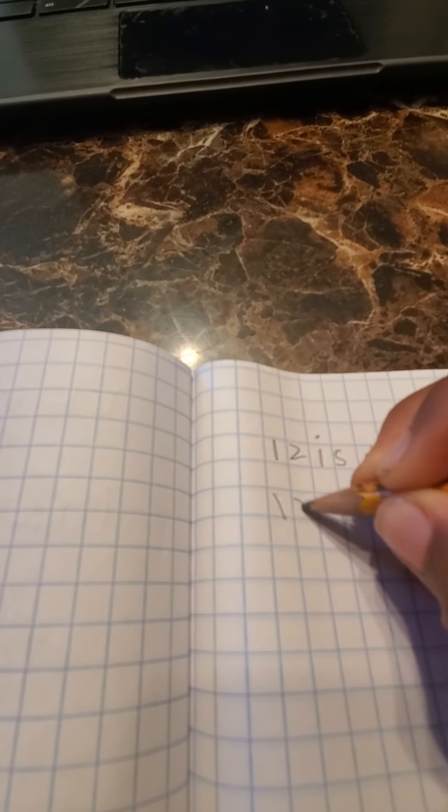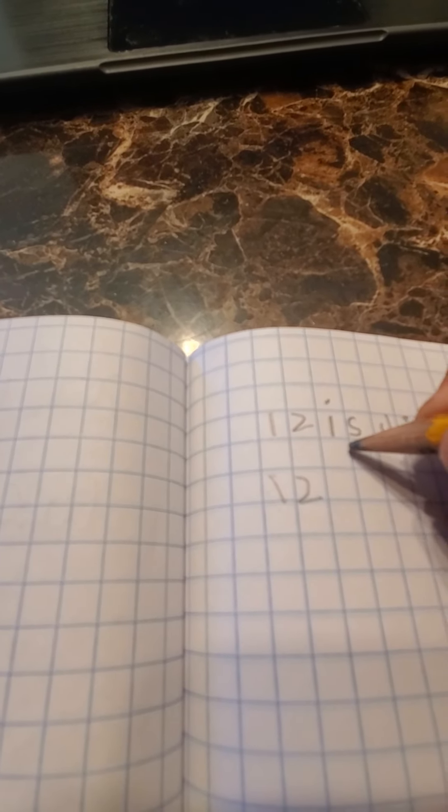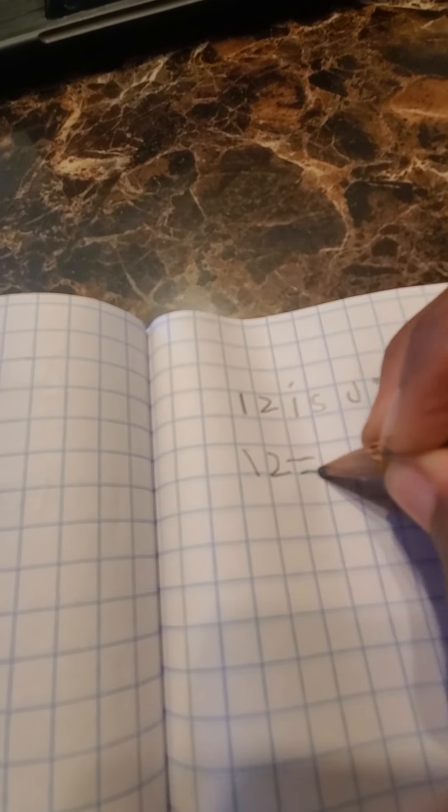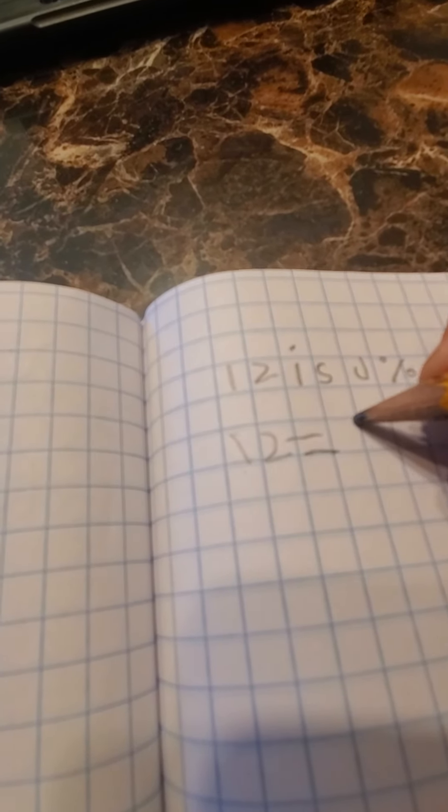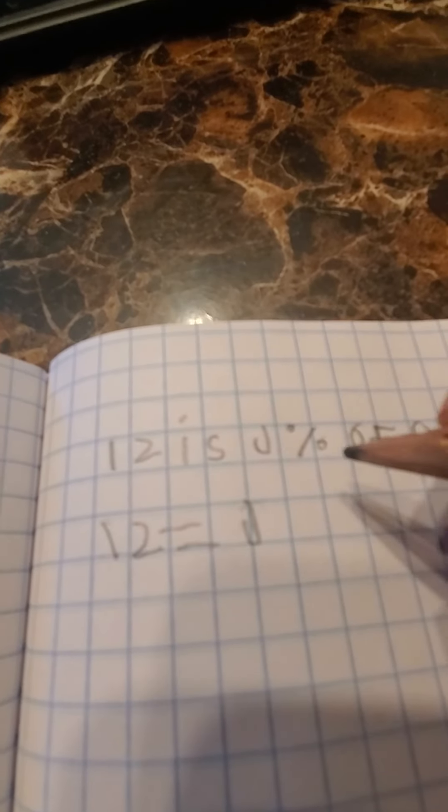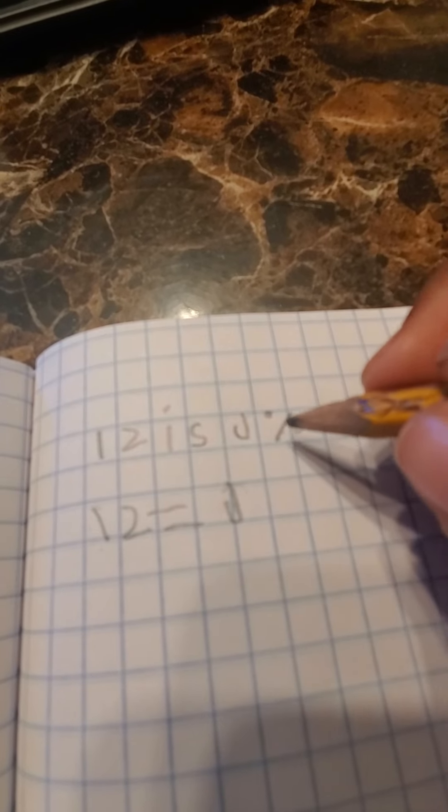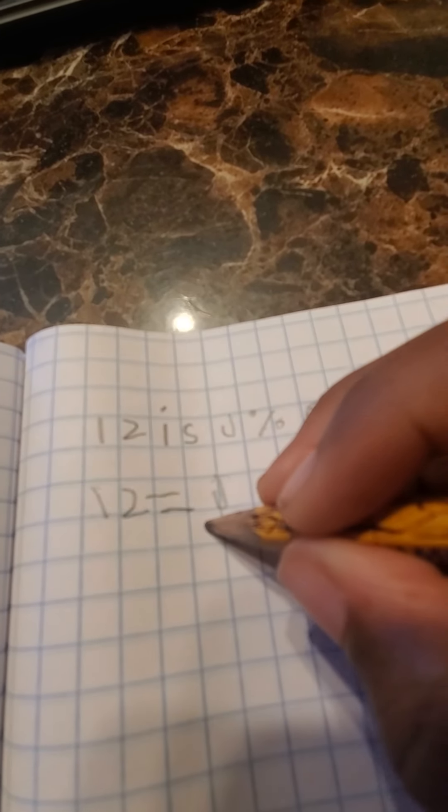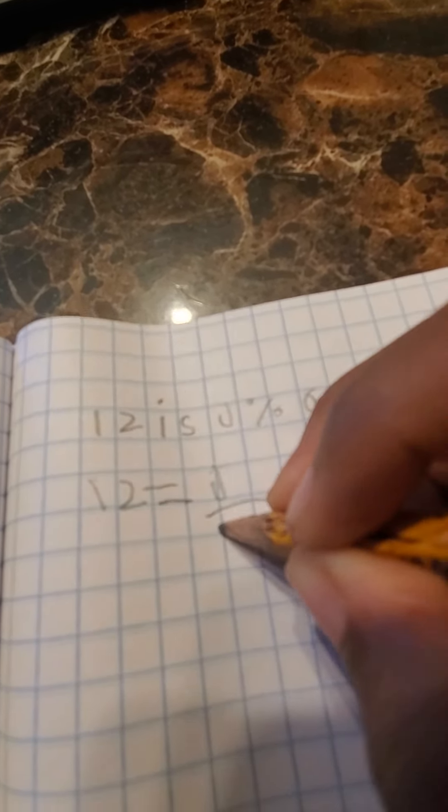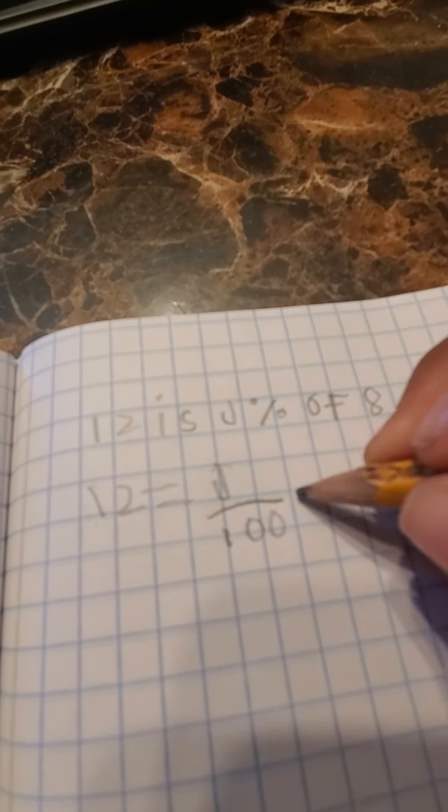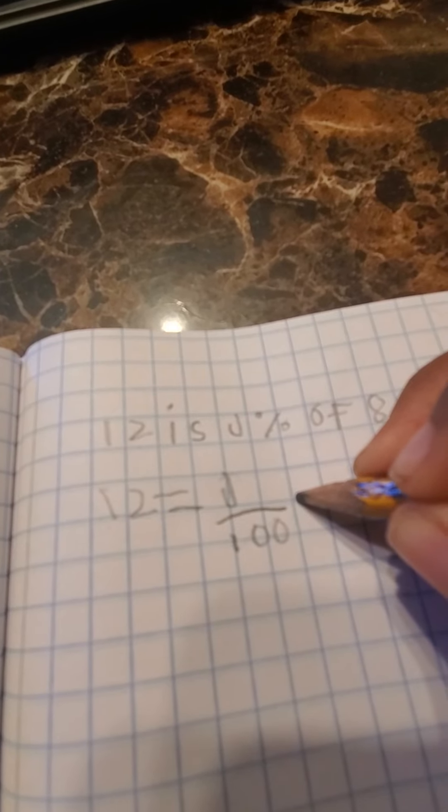12 is—12 equals J. Now a way my teacher told me to remember this is look at the percent sign, move it to the front. What does it look like? A hundred. So J over 100. 'Of' always means times, J over 100 times 8.